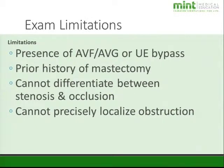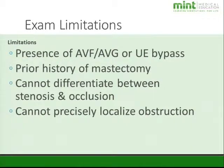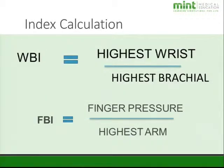We cannot differentiate stenosis from occlusion with these tests — only whether disease is present or not. We also cannot precisely localize the obstruction. Just like with the ankles, it's the highest wrist pressure over the highest brachial. For the fingers, it's the finger pressure in each digit over the highest brachial pressure.